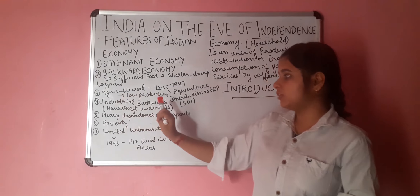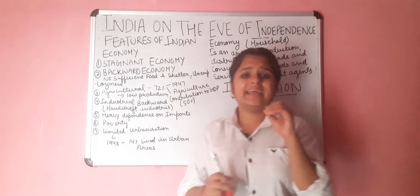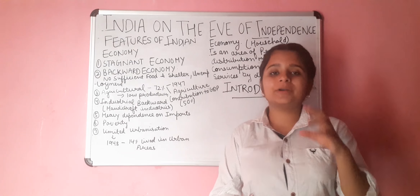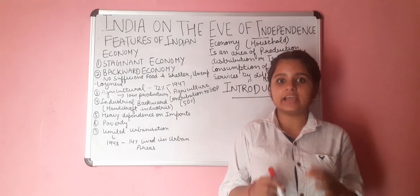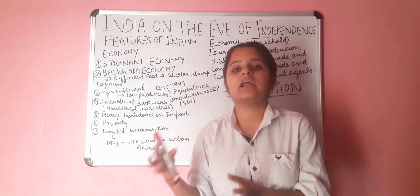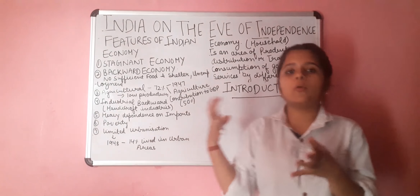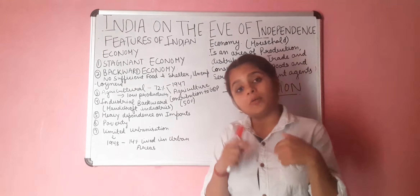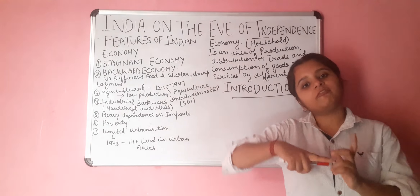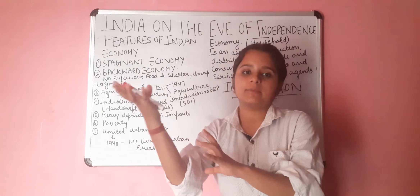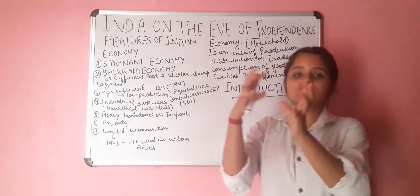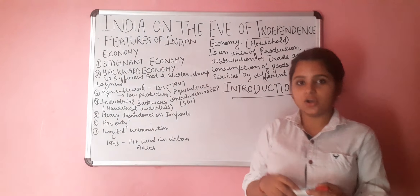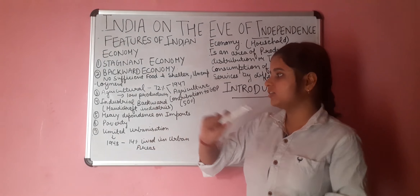Next is feature 4: industrial backwardness. Our industries were backward because the British heavily exploited our handicraft industries. They took raw materials from here and went back to Britain to finish and manufacture the products there. Then they would bring those finished products back to India and sell them here. This is what made us industrially backward.